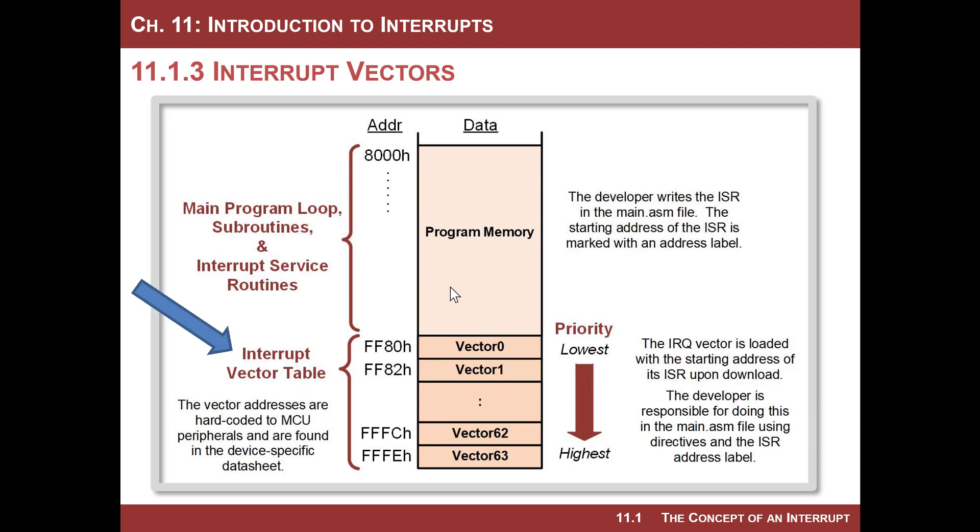If you look at program memory, this is common for all microcontrollers, actually every computer. But program memory is sitting here. And then at the very, very end, the last addresses, you have this thing called the interrupt vector table. And it is going to have these vectors that go from however many are in your MCU. This example has 0 to 63 just as an example. But they're going to basically fill up the last addresses in the non-volatile program memory.